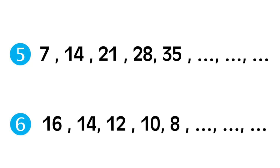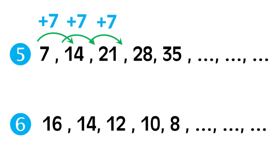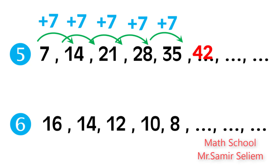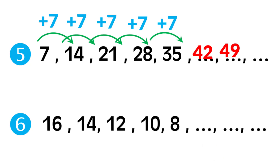Number five: seven, fourteen, twenty-one, twenty-eight, thirty-five — add seven each time. Fourteen plus seven equals twenty-one. Twenty-one plus seven equals twenty-eight. Twenty-eight plus seven equals thirty-five. Thirty-five plus seven equals forty-two. Forty-two plus seven equals forty-nine.